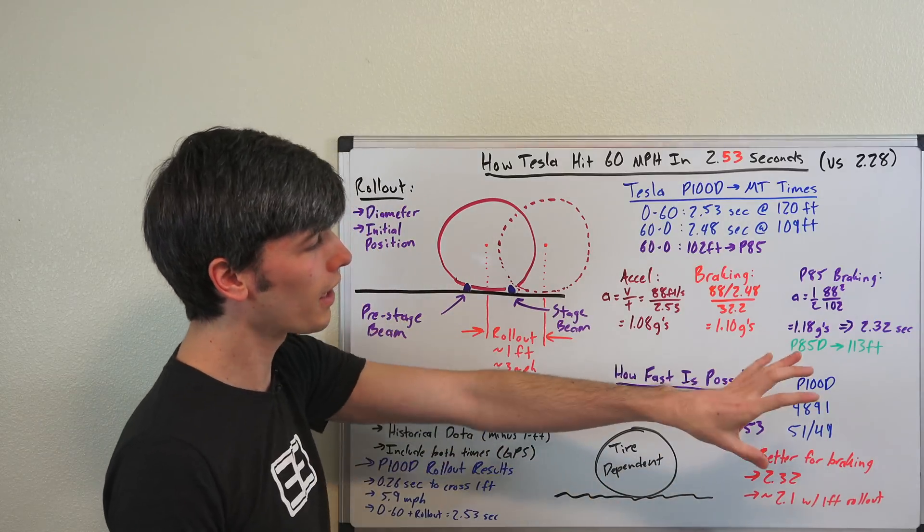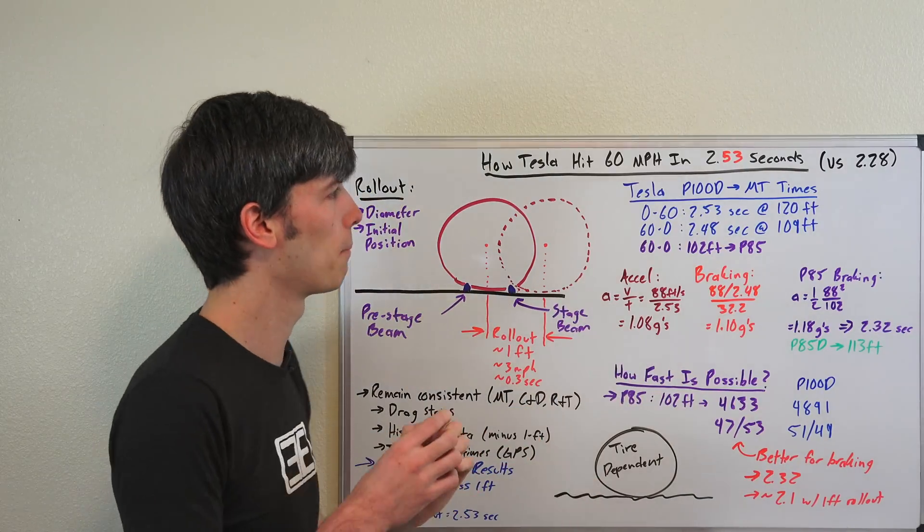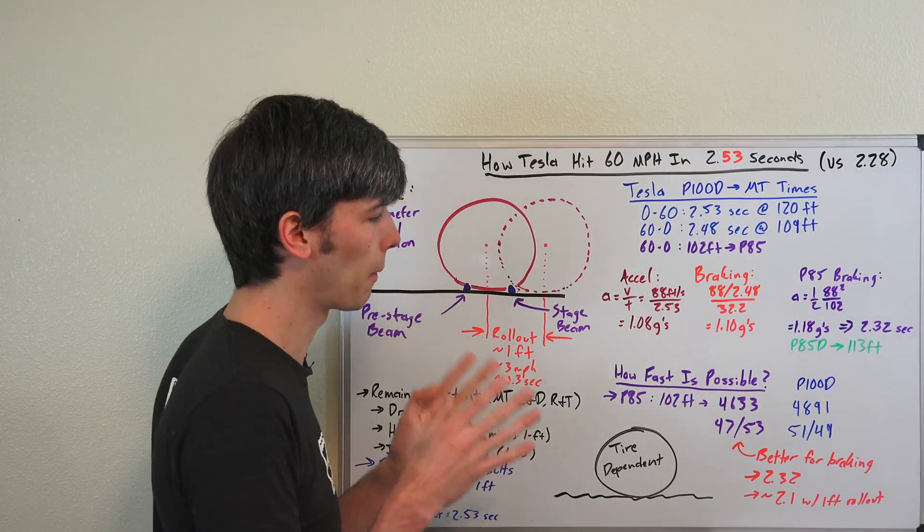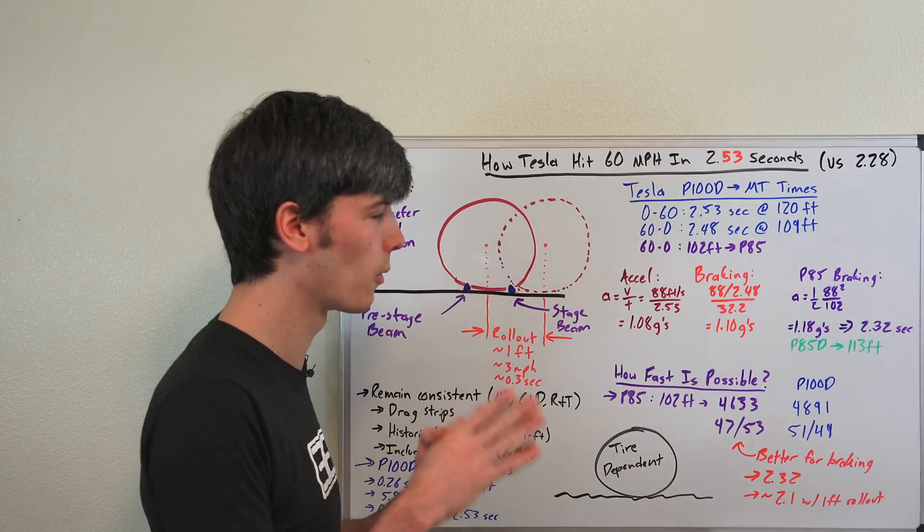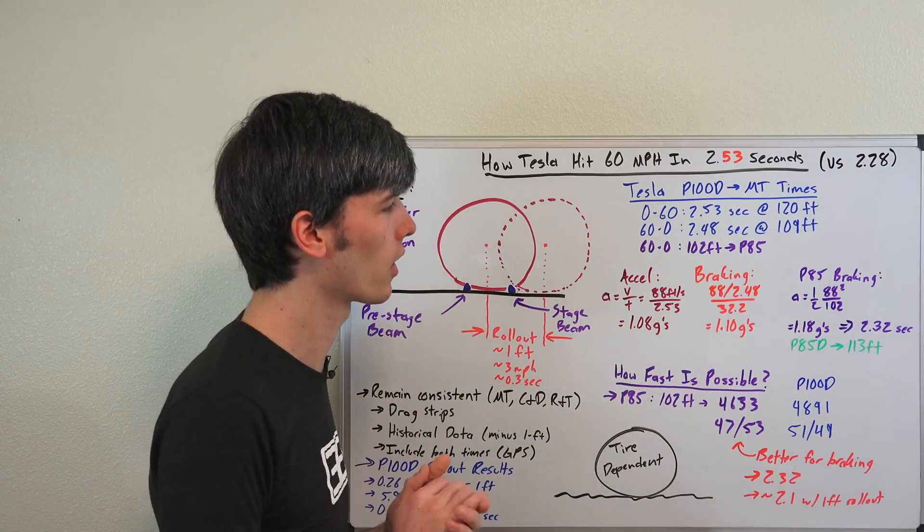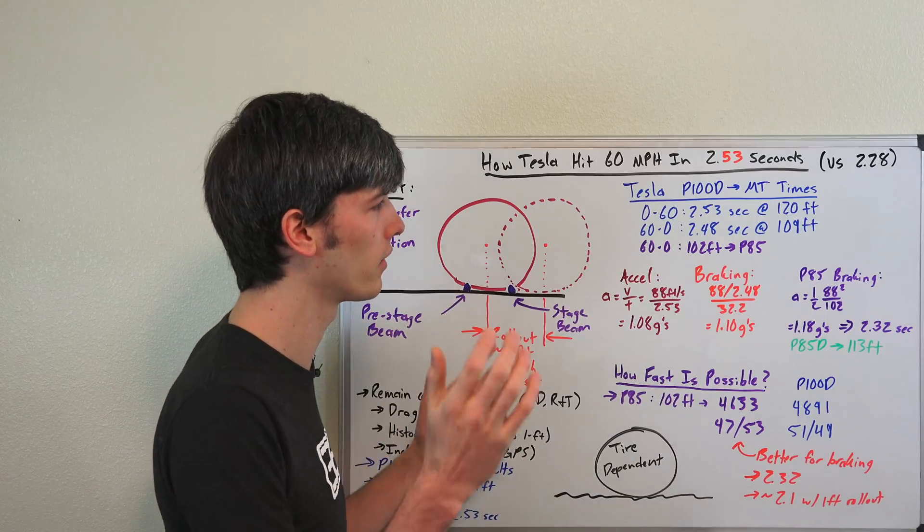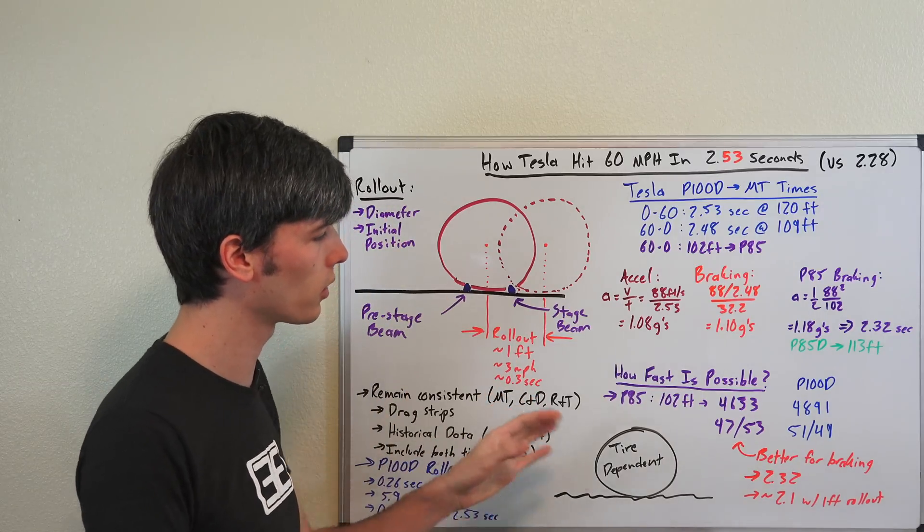So a theoretical 0 to 60, what's the fastest time we'll ever see a Tesla P100D accelerate based on today's current street tire technology. We're not talking about race car tires. A lot of people like to jump in the comments and talk about top fuel at 0.8 seconds 0 to 60, things like that. That's on a completely different tire. We're talking street legal tires here.